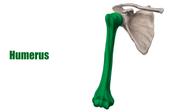The humerus comes next — you can see it here from the anterior view — and it forms the structure of the upper arm, or brachial region. It is a long bone, and the distal end of it is what people are referring to when they say they hit their funny bone. No one thinks it's funny at all.